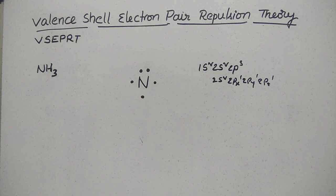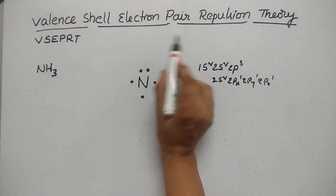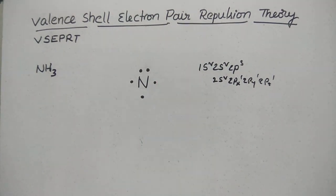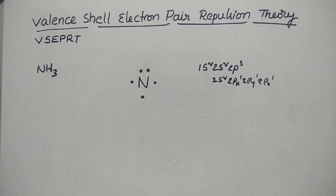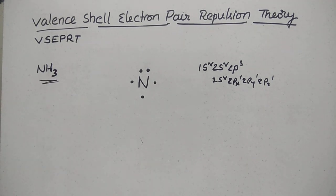The key concept of valence shell electron pair repulsion theory is quite involved, so in order to understand this theory, let's talk about an example — the formation of ammonia.